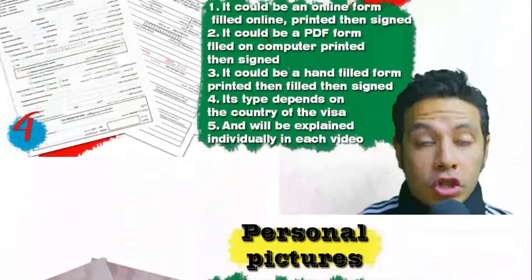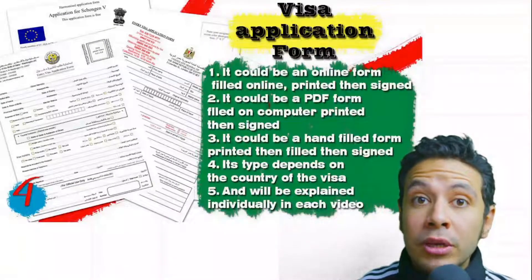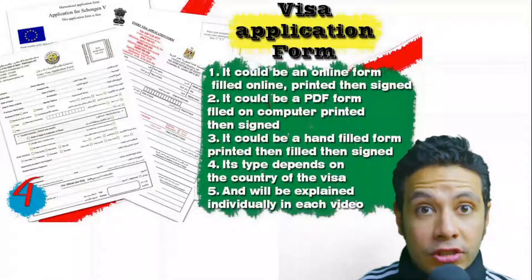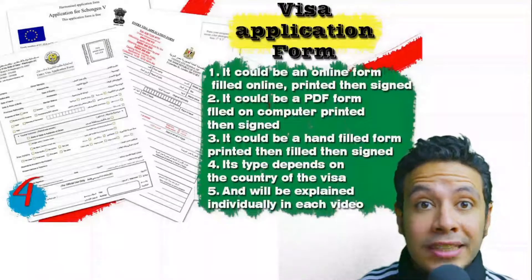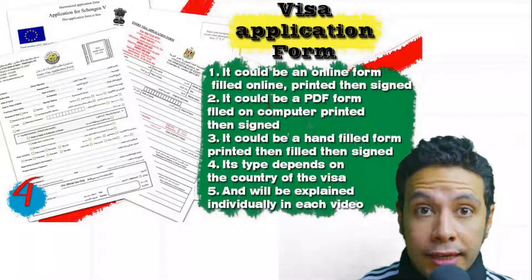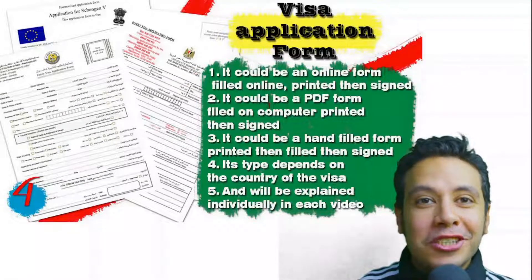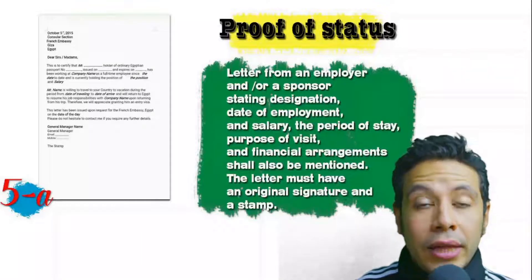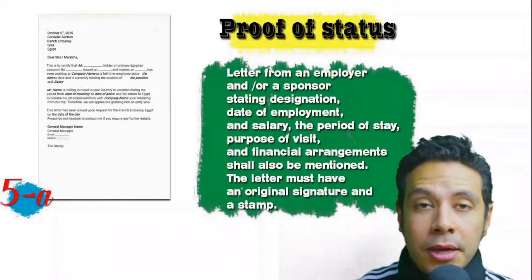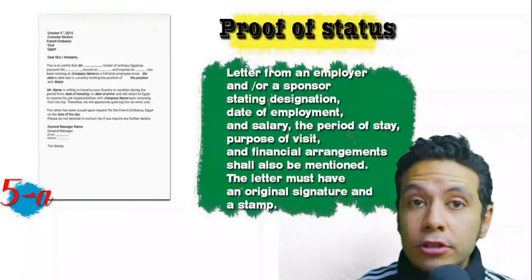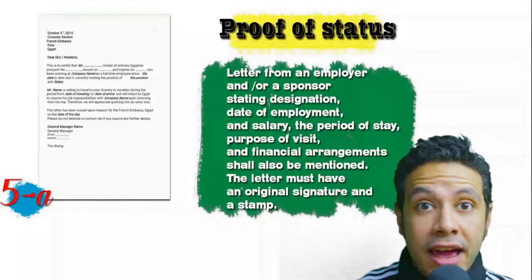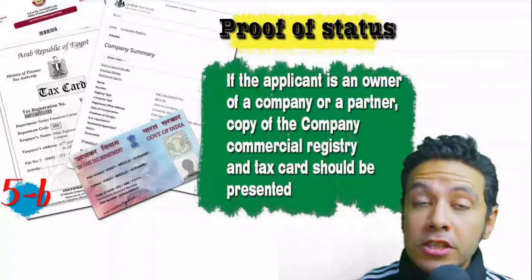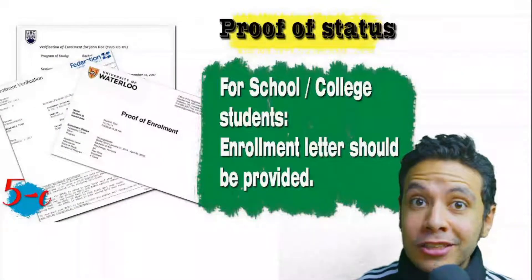For the visa application form, generally you need one copy, though sometimes two or three are required. Many countries now provide the application form on an online platform so you can fill it online and then print and sign it. For proof of status: if you are an employee, provide a letter from your employer or HR department mentioning your name, work details, salary, address, and contact numbers, with an original signature and stamp. If you own a business, your commercial registry and tax card must be presented. If you are a student, an enrollment letter from your university or school is required.